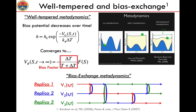In addition to this, we use the so-called bias exchange metadynamics, in which you perform different simulations of the same system in parallel, applying a bias on different sets of collective variables. At regular time intervals you try to exchange two consecutive replicas in the same way as in replica exchange molecular dynamics, using the same criteria. In this way you can enhance the sampling of conformational space better than in plain metadynamics.